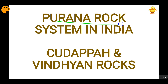This Purana rock system is a part of the Archean rock system. The Archean rock system was divided into Archeans, Gneiss and Schist, then the Dharwar system, and one more division — the Purana rock system. These Archean rocks are also known as Purana rocks, but I am covering this Purana rock system separately. Its further classification consists of Kudappa rocks and Vindhyan rock.